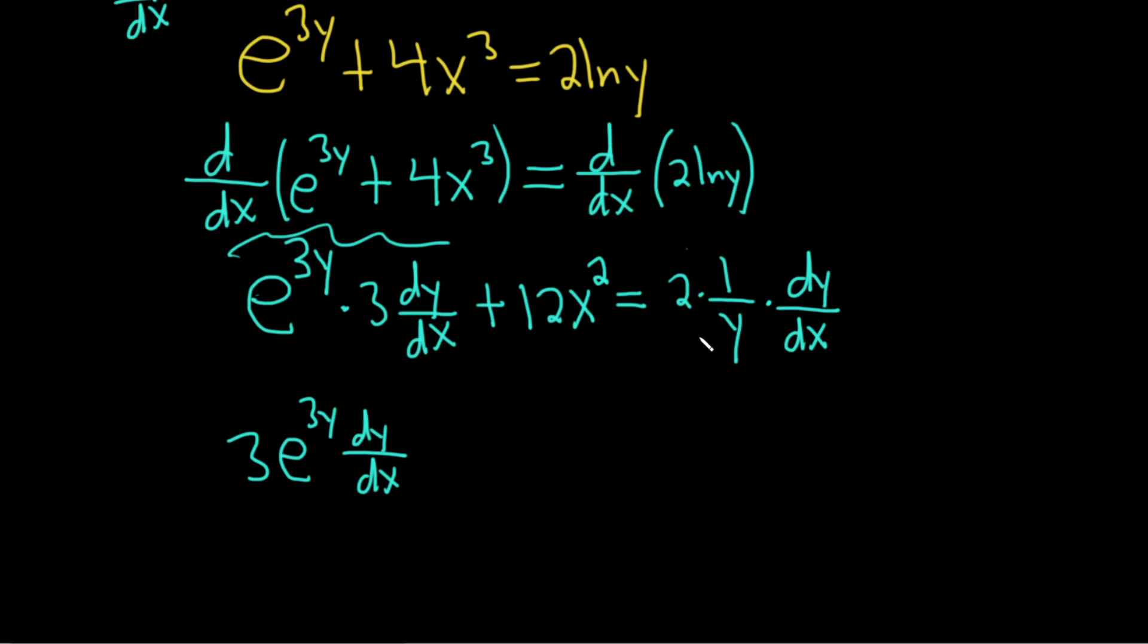Then let's subtract this over, so we'll bring it over here, it'll become negative. So minus 2 over y dy/dx. Then subtract this to the other side, so it'll become negative there. So negative 12x squared.